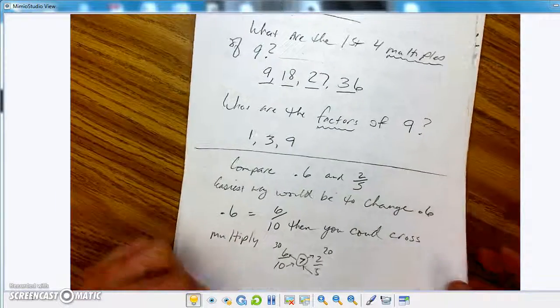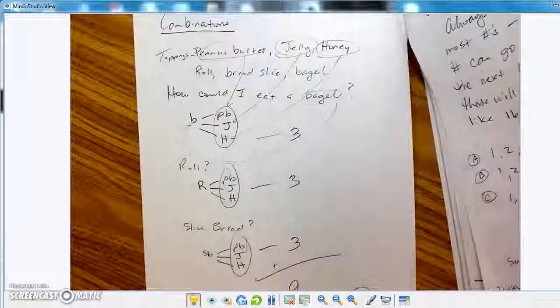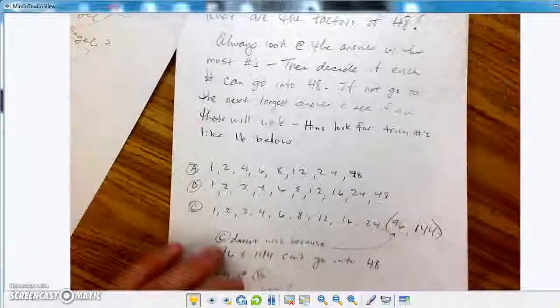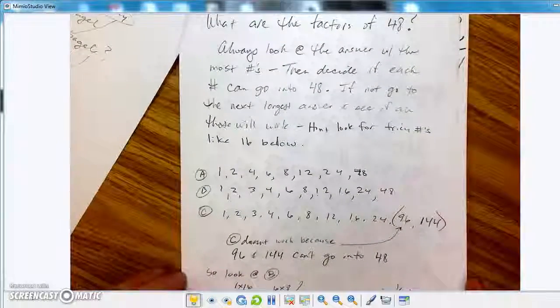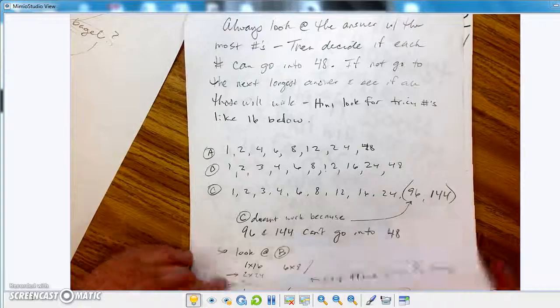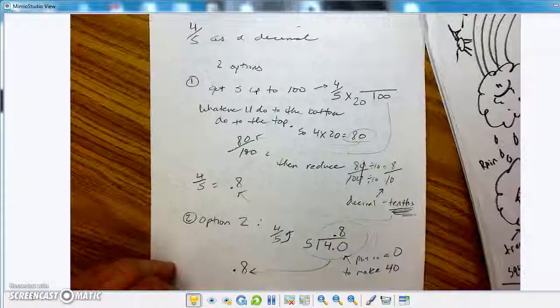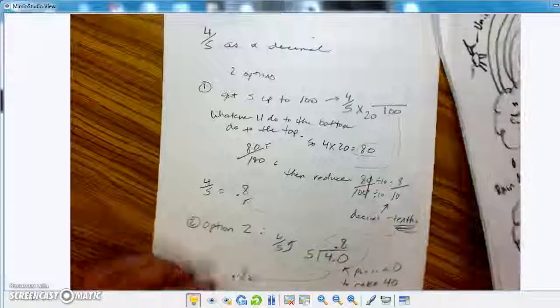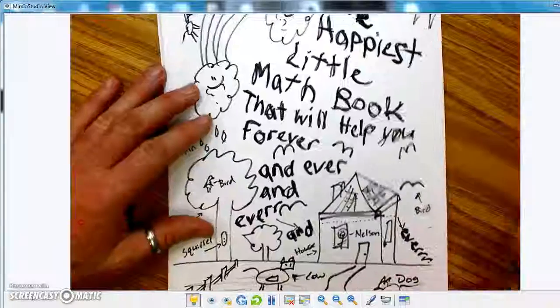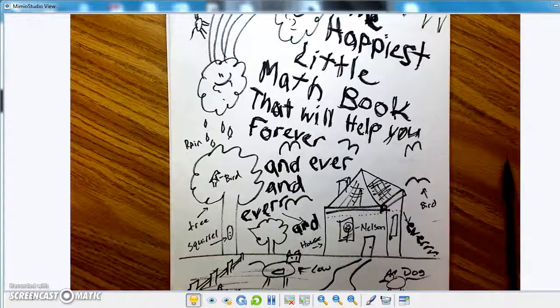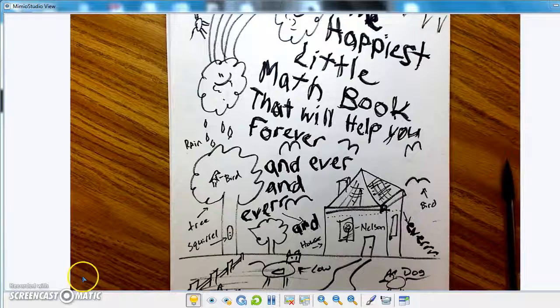These are extra practice pages. I'll just kind of flip through them, in case you don't have this. You can pause it, if you want. What I would do on the book is, I don't know, create your own. Try making your own problems, and then seeing if they work out. You can bring them to me, and I'll check them out for you, if you're in my classroom, of course. And that's it. That is the happiest little math book that will ever help you forever and ever. And you get the idea.